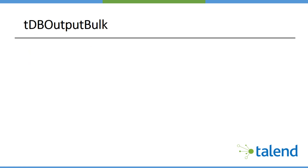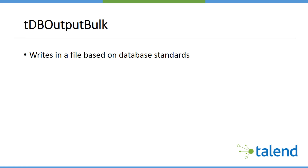The first component is the database output bulk component. This is used to write data in a flat file based on database standards. As the name indicates, this is used for writing bulk data — when you have really large amounts of data it's preferable to use this component and not the normal file output components. This is optimized for bulk insert.